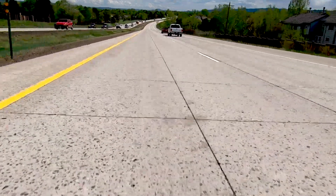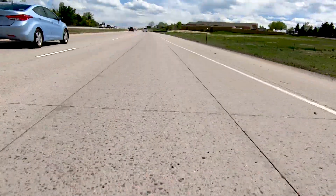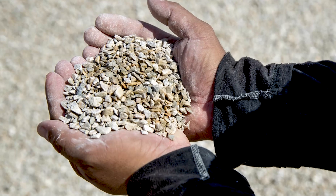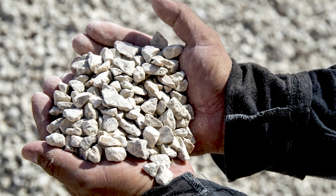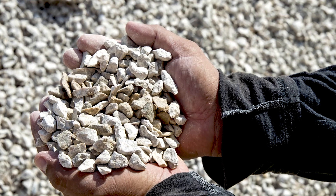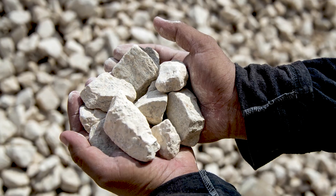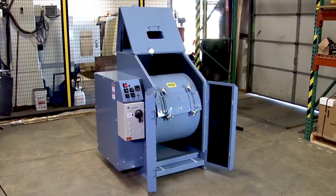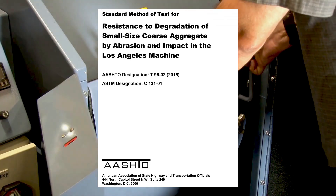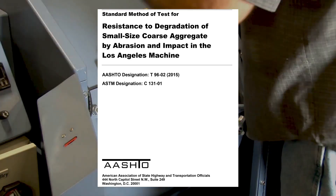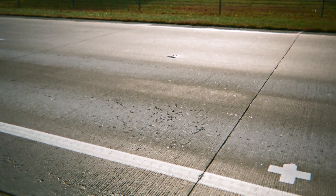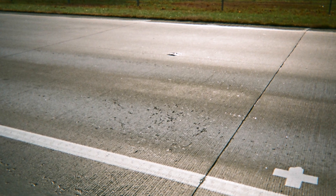Aggregates play an important role in determining the resistance of concrete to surface abrasion and wear. A good aggregate is hard, dense, and strong, and free of soft, porous, or friable particles. Aggregate resistance to abrasion and degradation can be tested by the Los Angeles Abrasion Test, AASHTO T96. Harder aggregate should be selected in highly abrasive conditions to minimize wear.